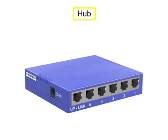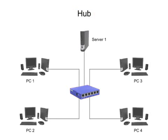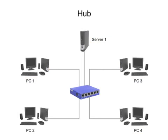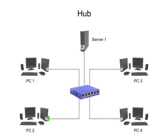A hub is a centralized connecting device, often located at the center of a star network, that automatically rebroadcasts any signal or data it receives from one device to all other devices on the network. Because all the devices connected to a hub are competing for media usage, it's possible for collisions to occur when two devices send transmissions simultaneously. For this reason, it's important to avoid using a hub for messaging that requires immediate response.